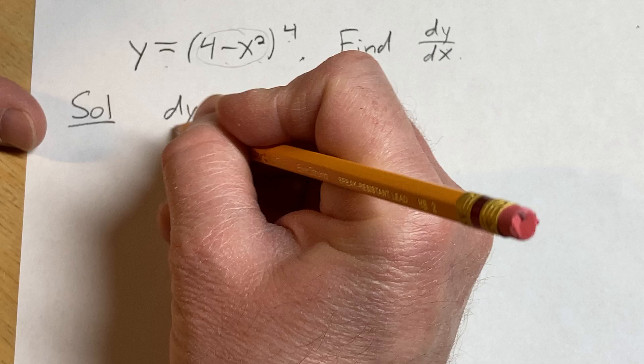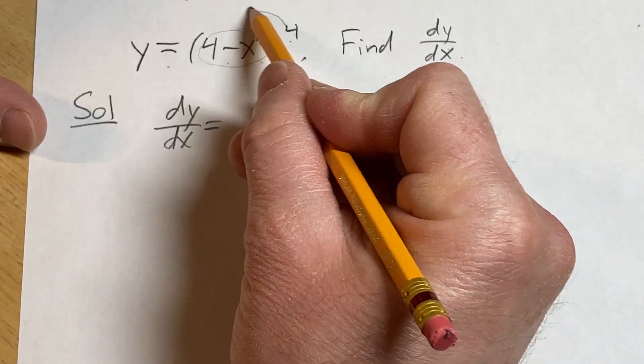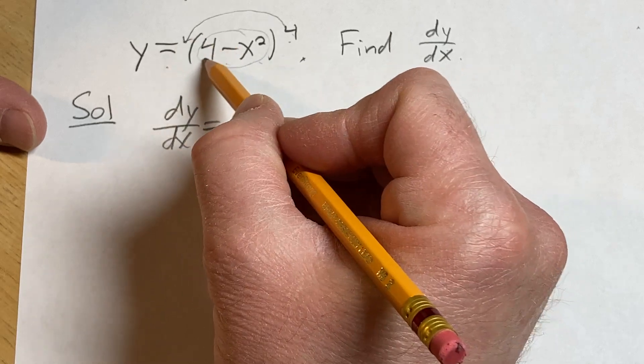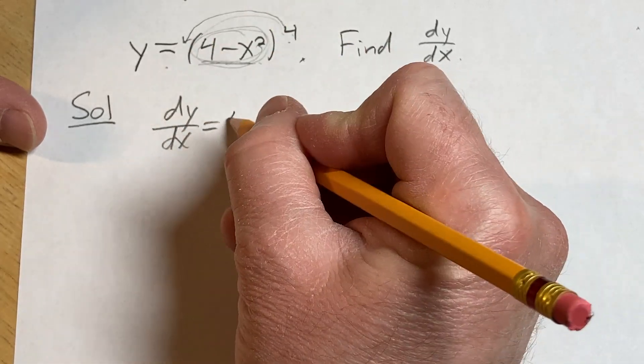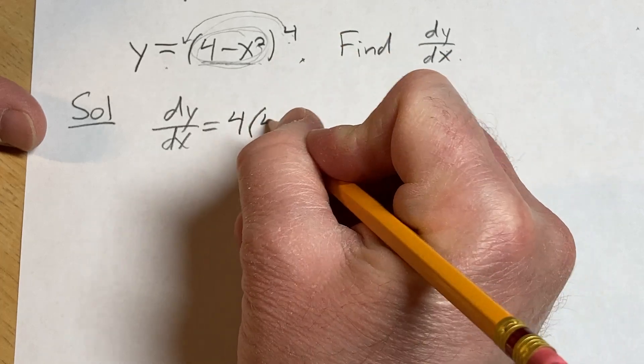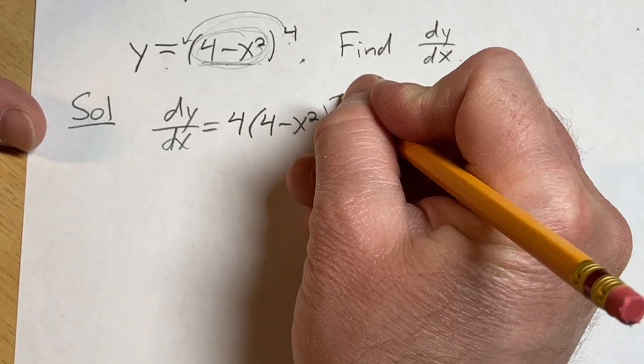So dy/dx, the chain rule says you take the derivative of the outside and leave it untouched, like you evaluate it at the inside. So you leave the inside alone. Bring down that 4, parentheses 4 minus x squared, then you subtract 1 from the exponent, so you get 3,